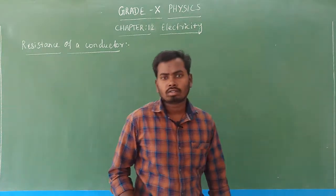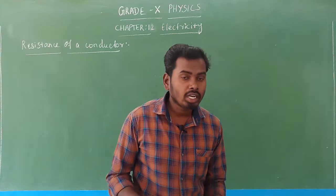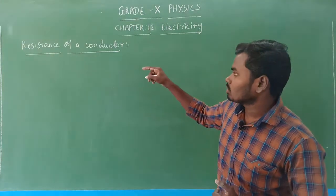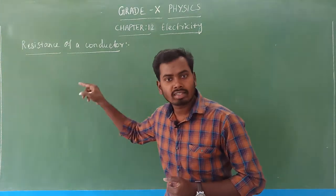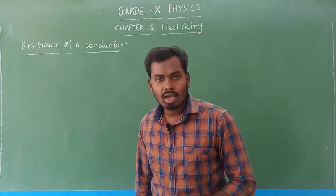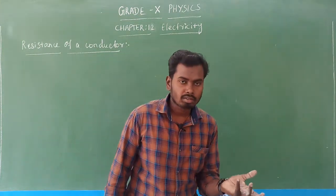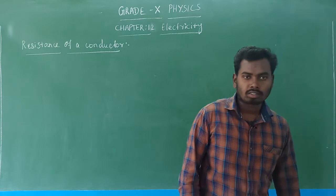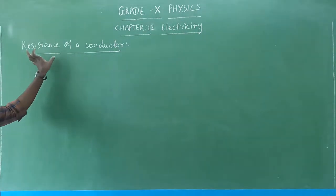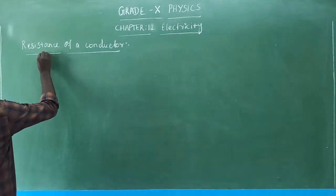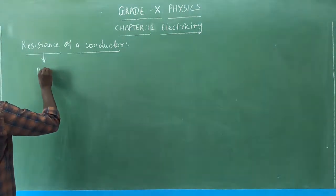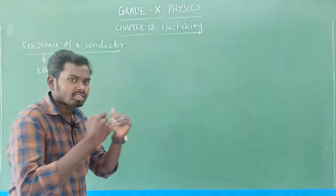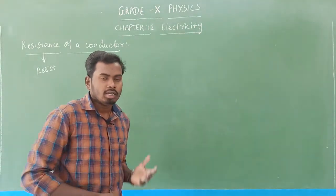We know what is potential difference and what is current, but we haven't studied what is resistance until now. The title itself reveals the answer — 'resist'. Something which resists, which means opposes, the flow of electrons, or the flow of current — that is called resistance.